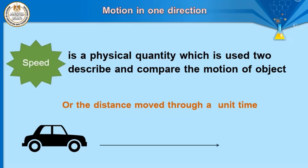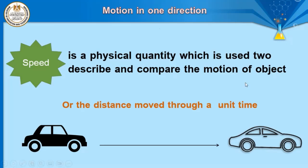Speed is the distance covered by an object in unit time. In front of you, this car moves a distance in a certain time to reach the final point. So we can describe the motion of this car by two factors: the distance covered by the object, and the time taken to reach the ending point. Distance and time are used to determine speed, which is a physical quantity used to describe motion.